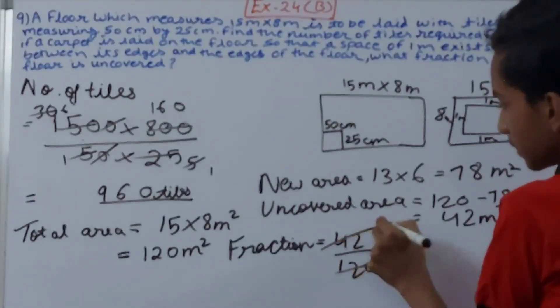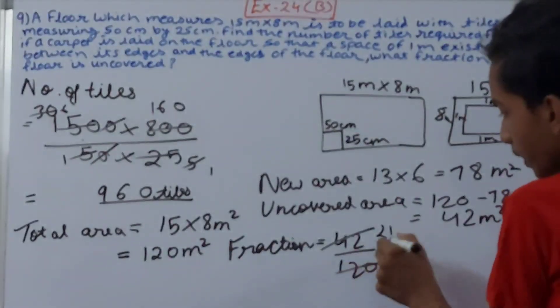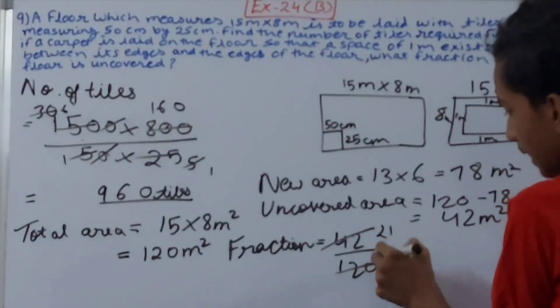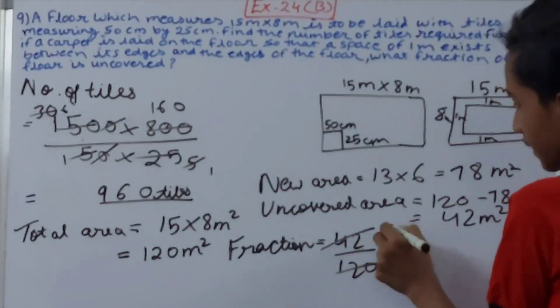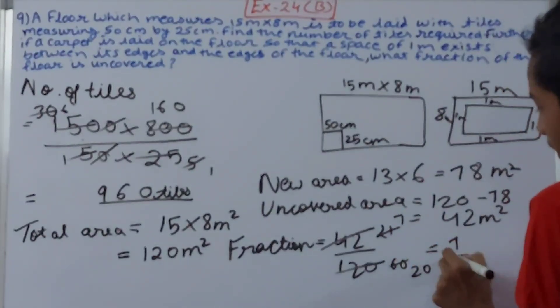7, so let's cancel this by 2, 21 and 60 here. What next? 21 and 60 will go by 3. So this will be 7, this will be 20. So 7 by 20 is the area of the uncovered portion. This becomes our second answer.